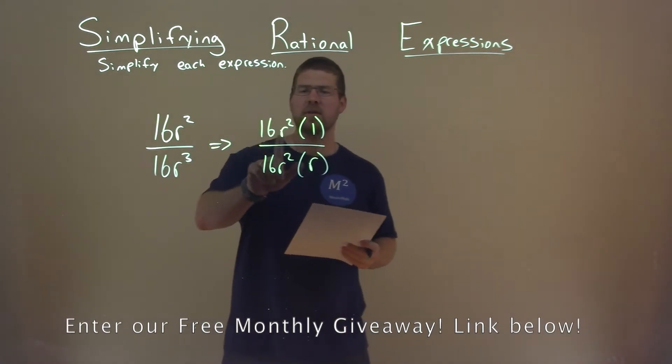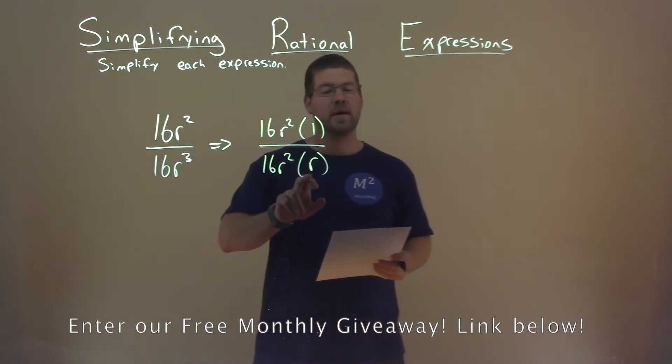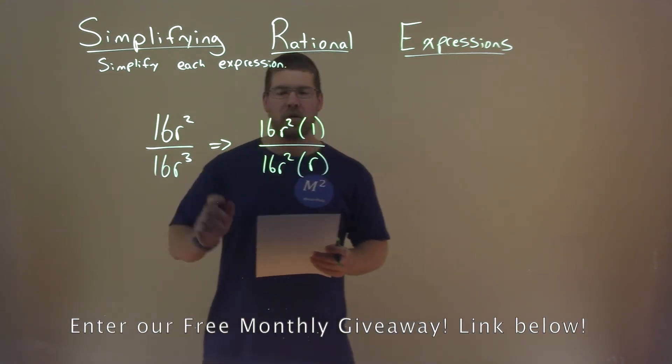So now let's look at this again. 16r squared times 1 is 16r squared. 16r squared times r is 16r to the third power.